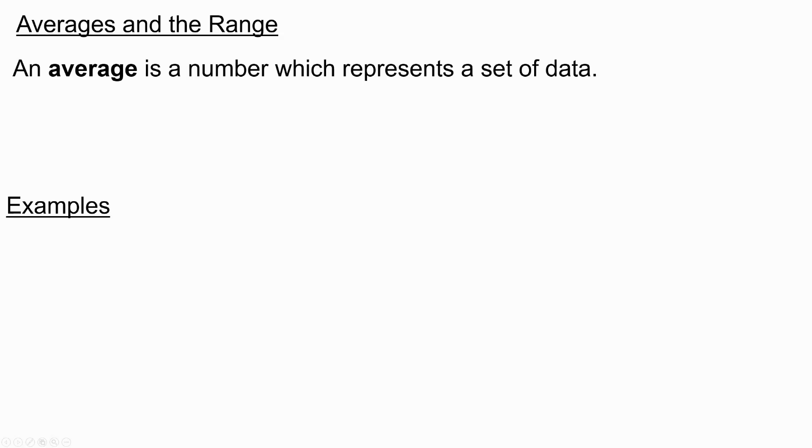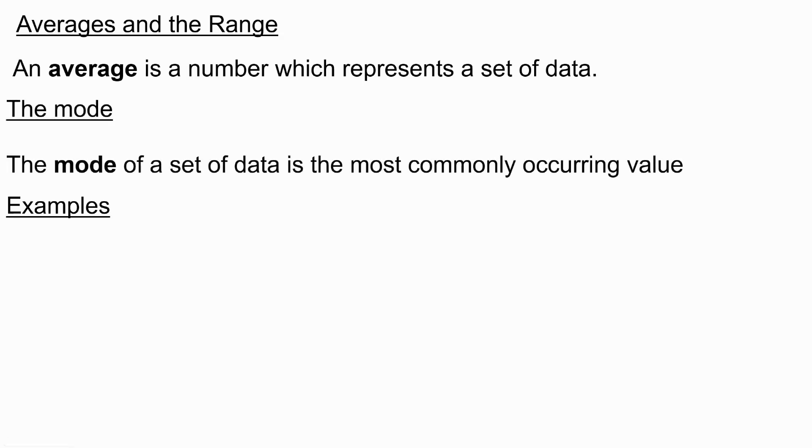An average is a number which represents a set of data. Firstly, we'll look at the mode. The mode of a set of data is the most commonly occurring value in that data set. It's the one that comes up the most.